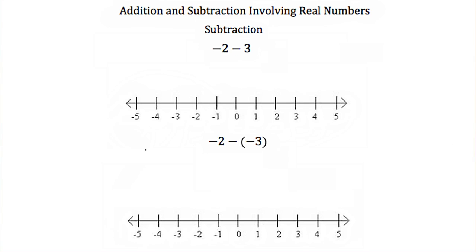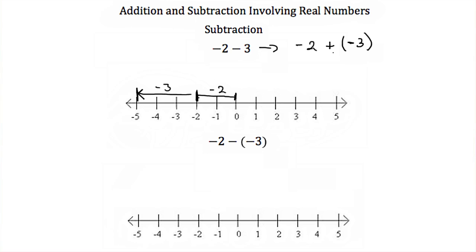Next we're going to talk about subtraction. Subtraction is just like addition — just opposite. So if you have negative 2 minus 3, you can think of this as negative 2 plus a negative 3. On a number line, we start at 0, move left 2 for negative 2, then move left 3 more for the negative 3. So negative 2 minus 3, or negative 2 plus negative 3, equals negative 5.